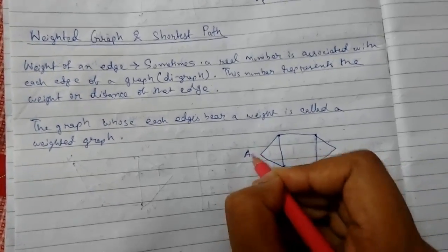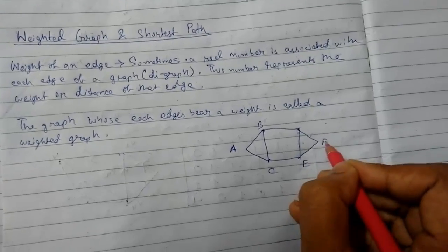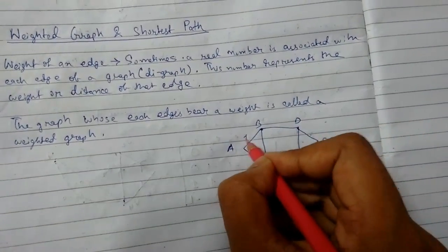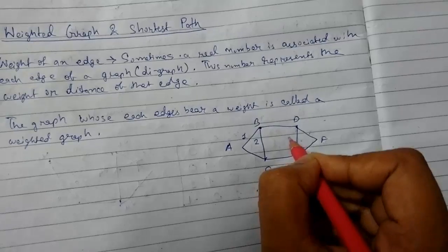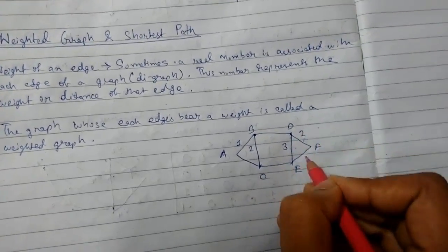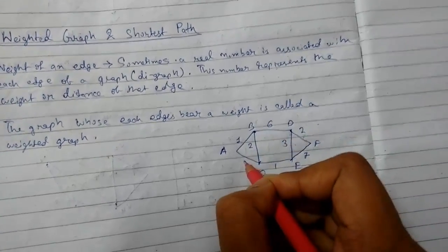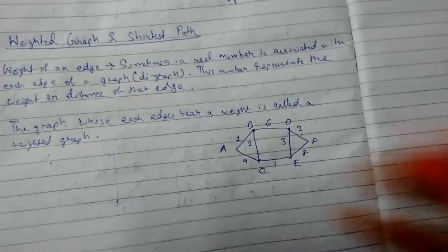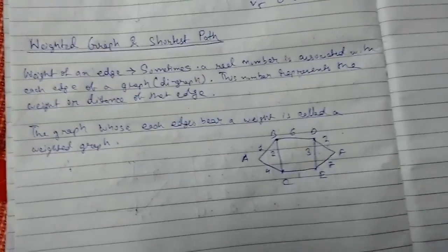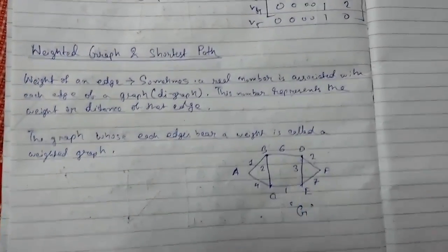I will just label it: A, B, C, E, F, D. This is 1, 2, 3, 2, 7, 1, 6, 4. So the numbers are the weights, and as a whole, this graph G, suppose, is the weighted graph.